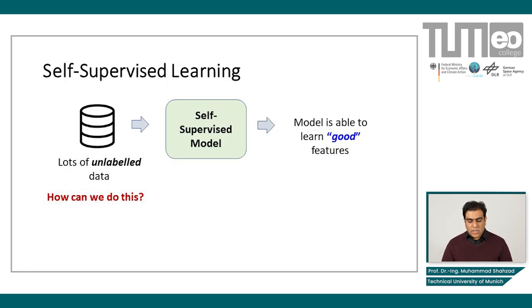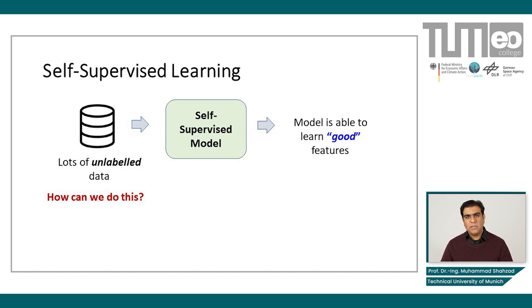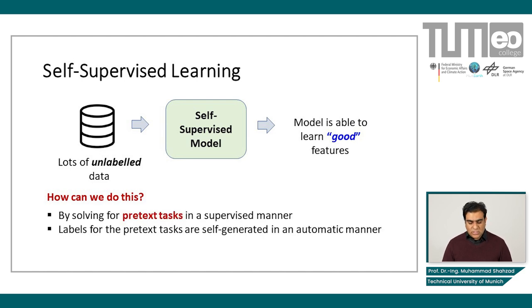In self-supervised learning, we have lots of unlabeled data, a machine learning model, and we use some techniques with unlabeled data to build robust feature representations. After training for a number of epochs, we are able to generalize features that are good enough. We achieve this by solving pretext tasks in a supervised manner, where labels for these pretext tasks are self-generated automatically.